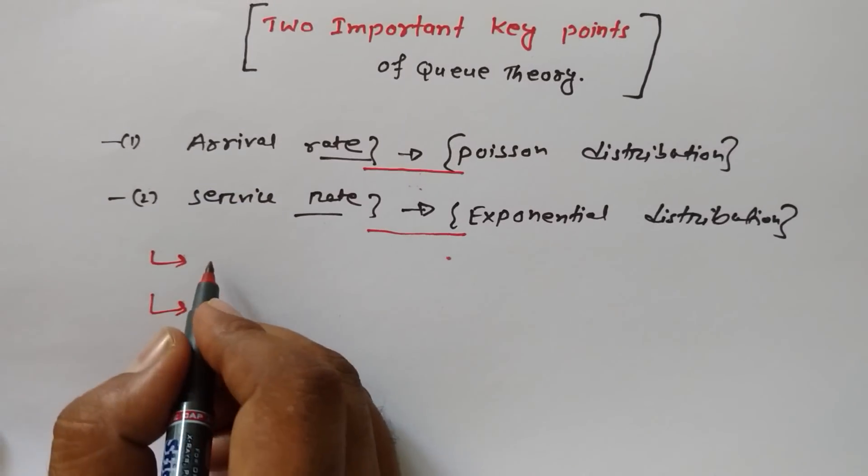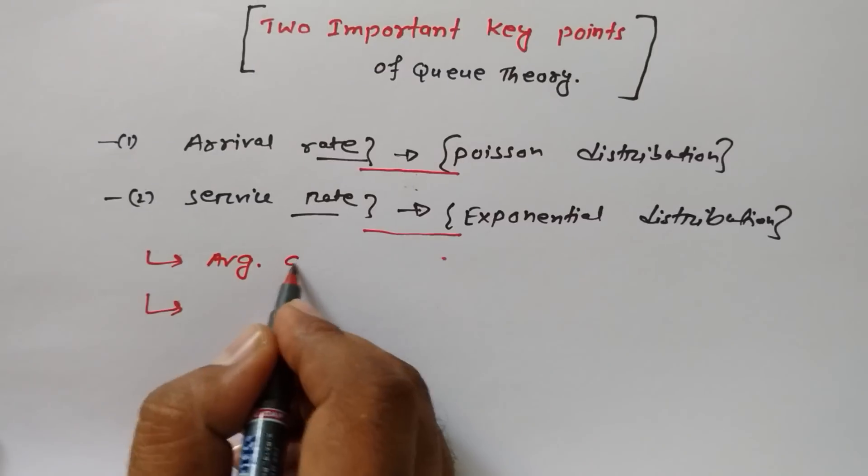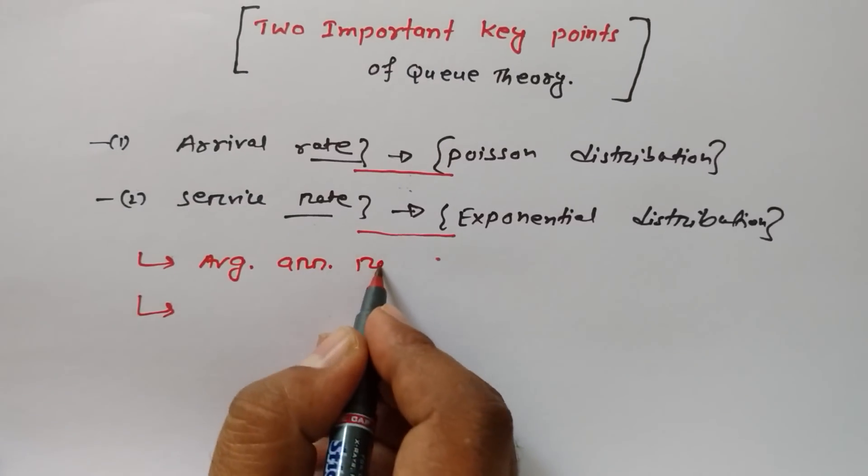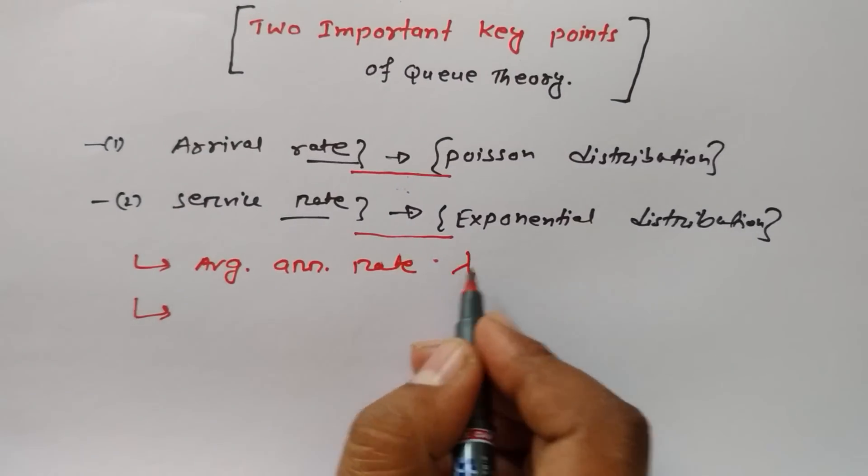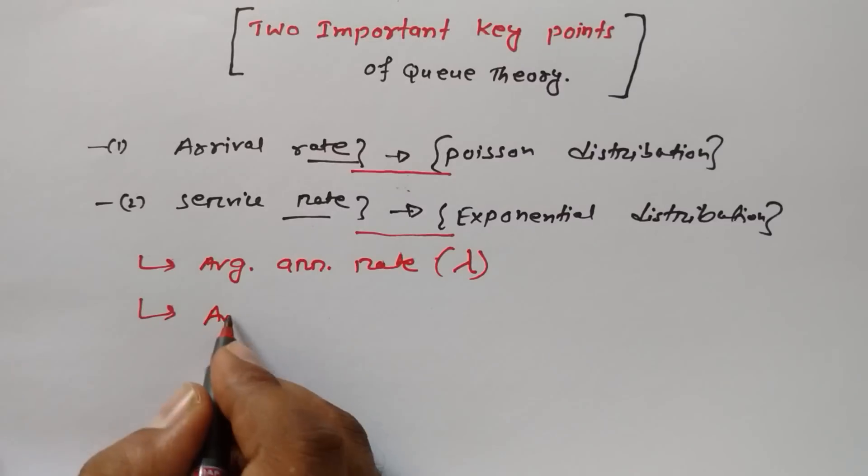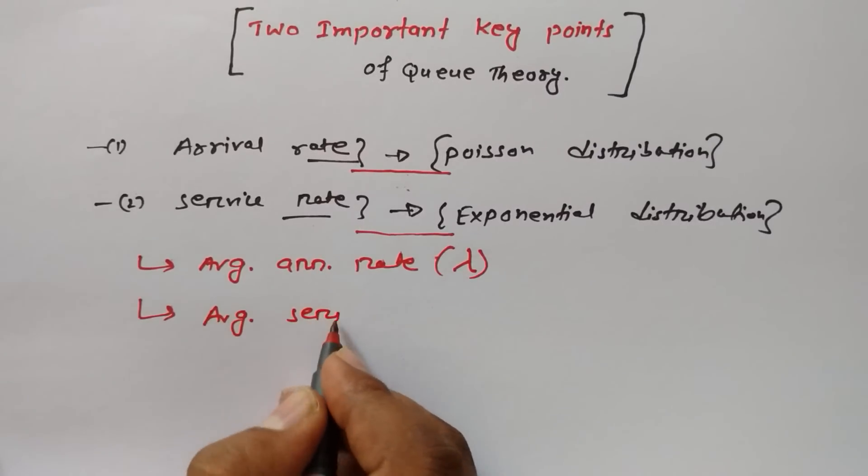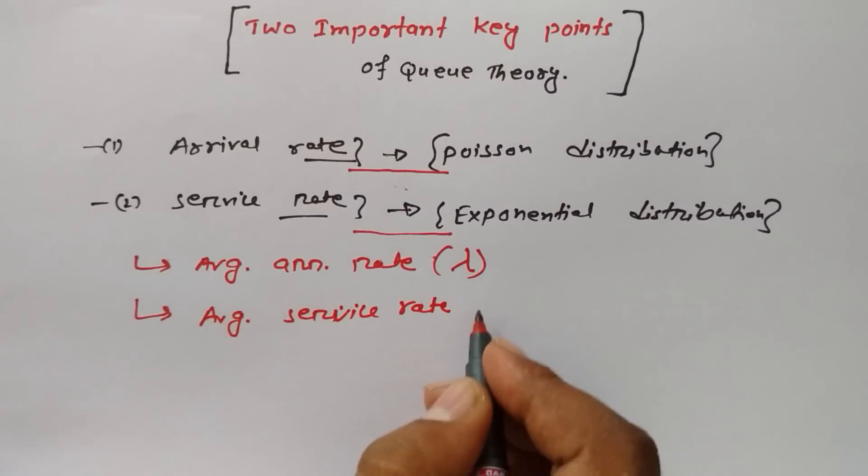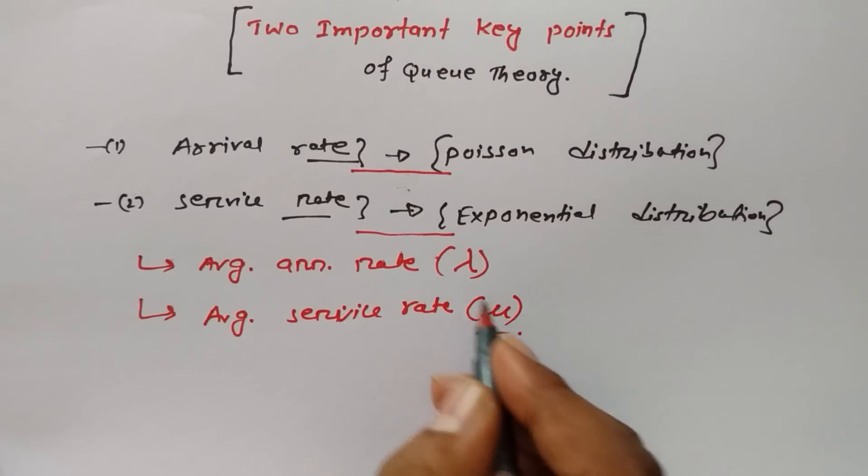Average arrival rate is denoted by lambda. And average service rate is denoted by mu.